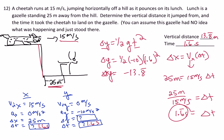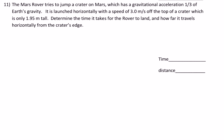Number 11: the Mars rover tries to jump a crater on Mars, which has a gravitational acceleration of one-third of Earth's gravity. It is launched horizontally with a speed of 3 meters per second off the top of the crater, which is 1.95 meters tall. Determine the time it takes for the rover to land and how far it travels horizontally from the crater's edge. I'm going to pause and make a drawing — I want you to do the same.